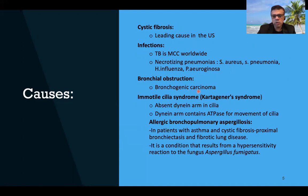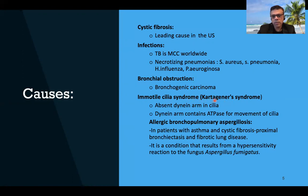Immotile cilia syndrome, also known as Kartagener syndrome, involves absent or abnormal cilia. More than half of patients with immotile ciliary syndrome have the classic triad of Kartagener syndrome. In immotile ciliary syndrome and Kartagener syndrome, there is an absent dynein arm — the dynein arm contains the ATPase responsible for the movement of cilia.